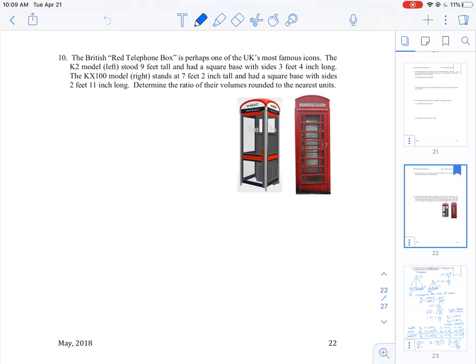Okay, so looking at question 10, the question is asking to determine the ratio of their volumes rounded to the nearest unit. So this is really just a question where we have to calculate the volume of I think the two telephone boxes.